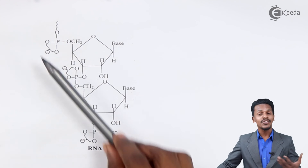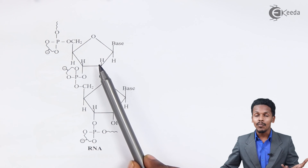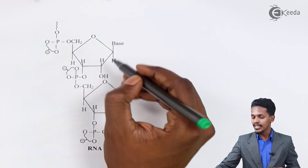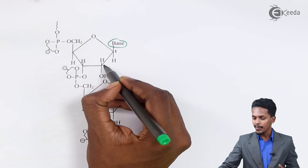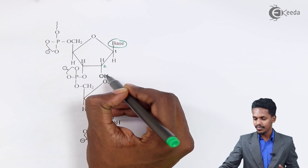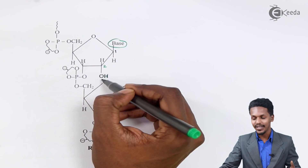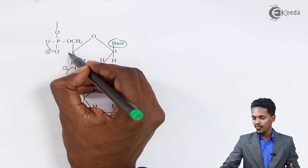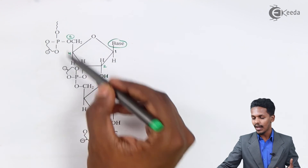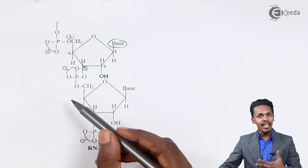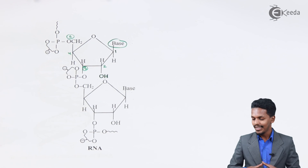Now about the structure of RNA — the sugar unit in RNA is ribose nucleic acid. Similar to DNA, on carbon number 5 and carbon number 3 we can find that a phosphate unit is attached to every nucleotide. And that is how the RNA is formed.